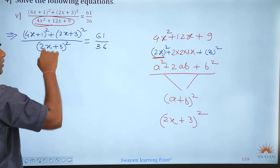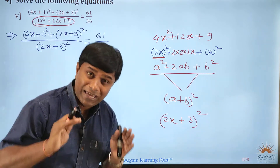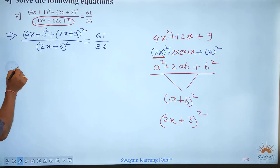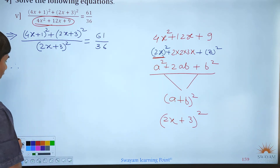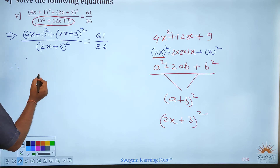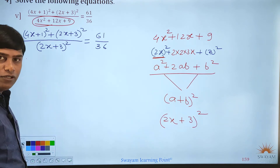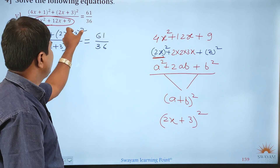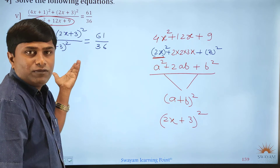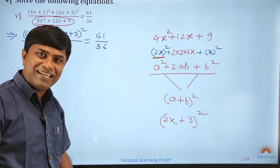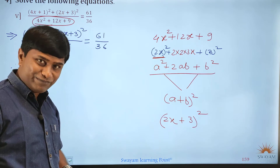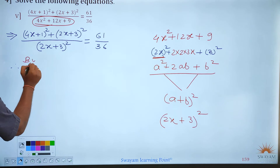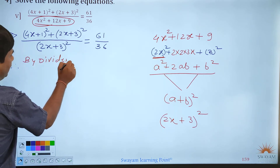What we did is change 4x² plus 12x plus 9 to (2x+3)². Now, why do we use dividendo only, and not componendo dividendo? The reason is that (2x+3)² appears in both numerator and denominator — if we use componendo dividendo we'll get stuck, so we use dividendo.